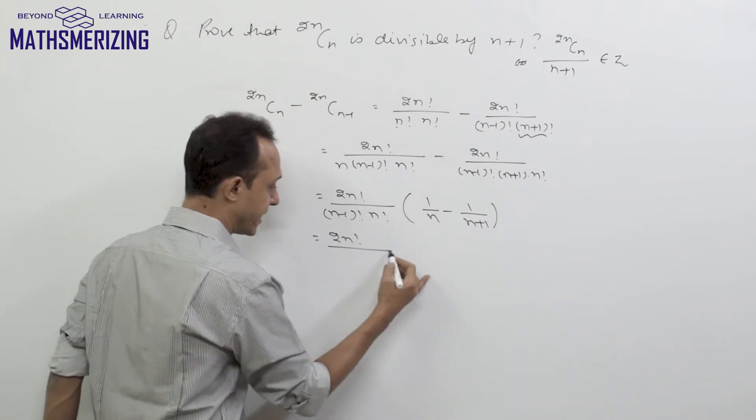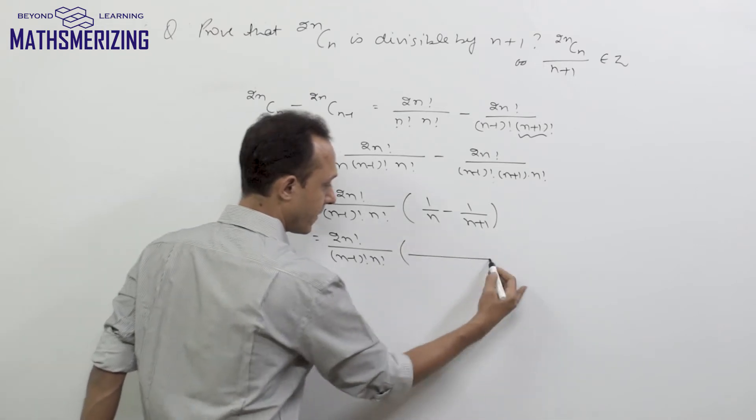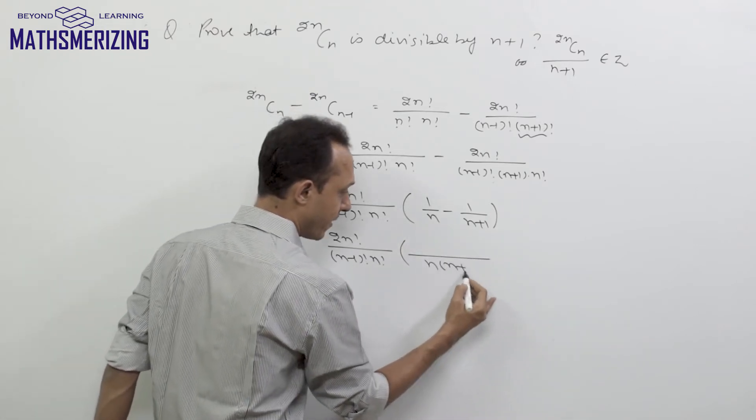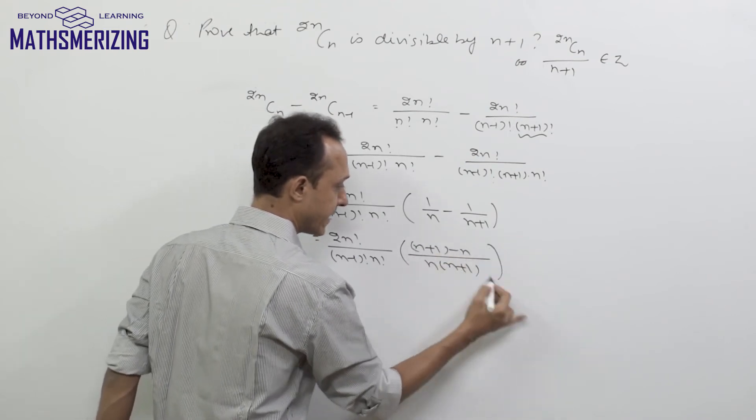So if I take LCM and solve it, I will get (n+1-n)/(n(n+1)). So it will cancel,